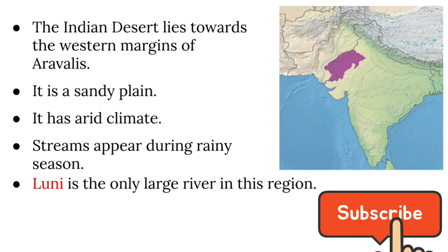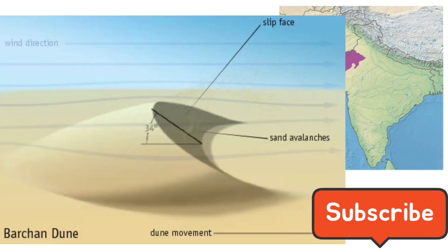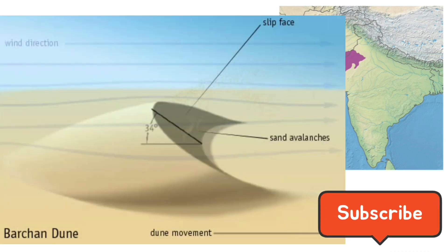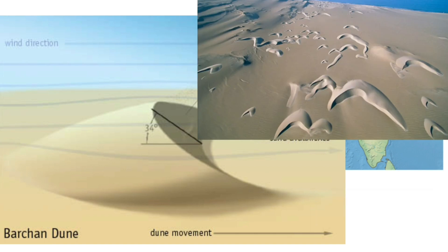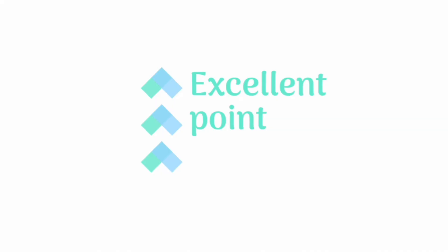Not only dunes, the Thar Desert or the Great Indian Desert also has barchans, or crescent-shaped dunes. This is the image of a dune, and this is the image of a barchan, and this is an example of barchans.